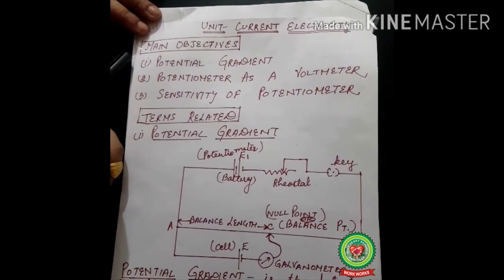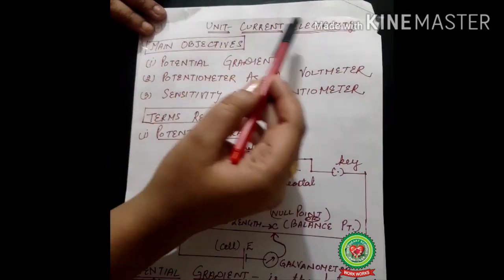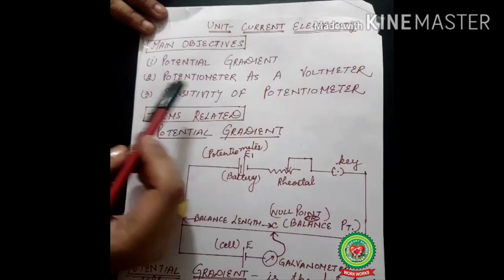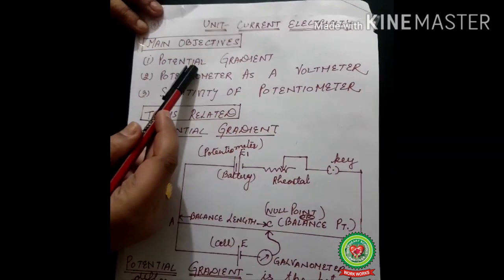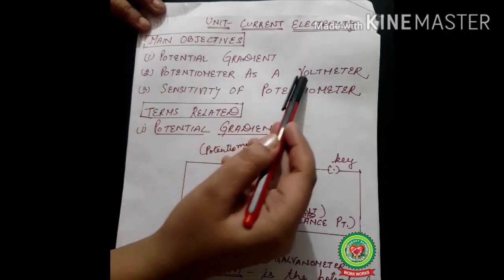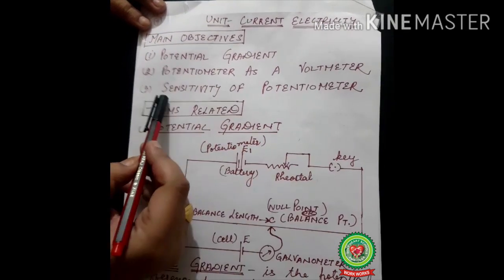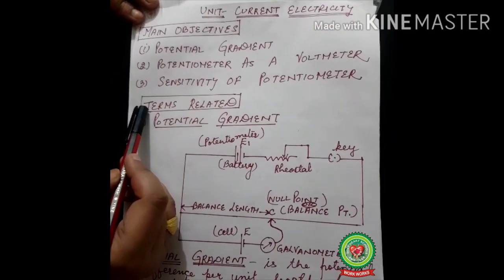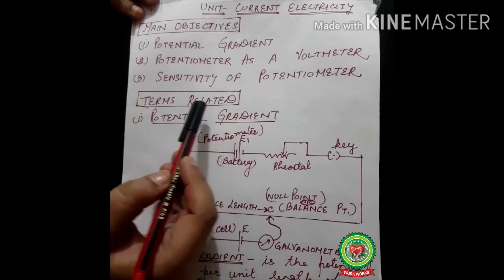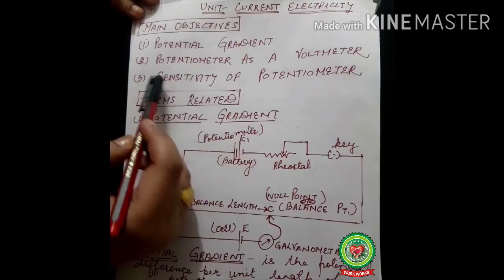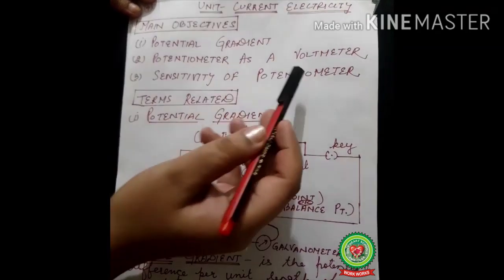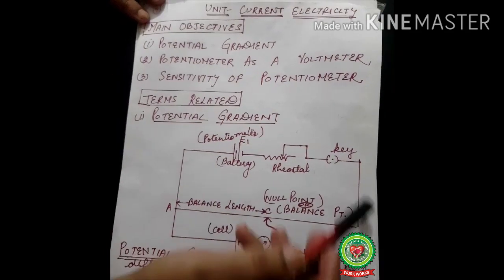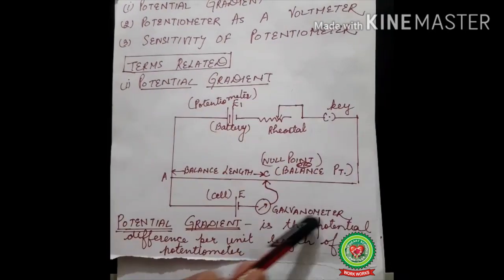Hello students, let's start with the unit electricity. The main objectives of today's topic will be potential gradient, potentiometer as a voltmeter, and sensitivity of potentiometer. The terms we are going to relate here will be potential gradient and sensitivity of the potentiometer. Before doing all these things, let us see the circuit here.